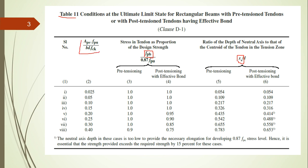First you have to find the reinforcement ratio, then determine whether it is a pre-tension member or a post-tension member with effective bond. For Table 11 in IS 1343:2012, there is only one case — post-tension with effective bond — where the gap between the tendons and the duct space has been filled by cement slurry, i.e., grouting has been done. First find the value of x_u, check whether the neutral axis lies in the web or the flange, then find the value of f_pb.